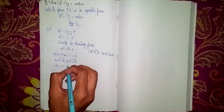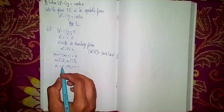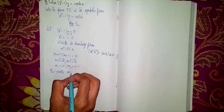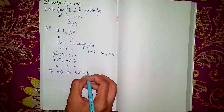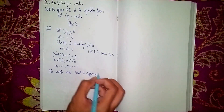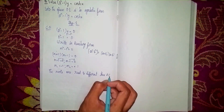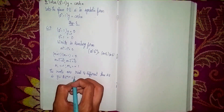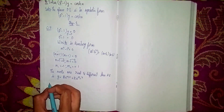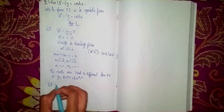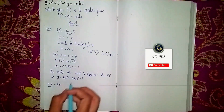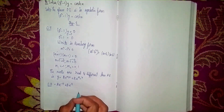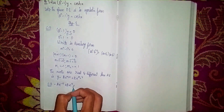Setting each factor to zero: m+1 = 0 gives m₁ = -1, and m-1 = 0 gives m₂ = +1. The roots are real and different. So the complementary function is y = A·e^(m₁x) + B·e^(m₂x), which becomes CF = A·e^(-x) + B·e^(x). We have completed step one.